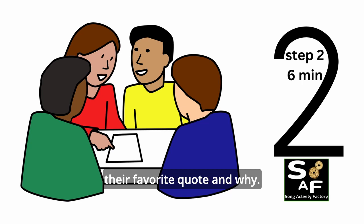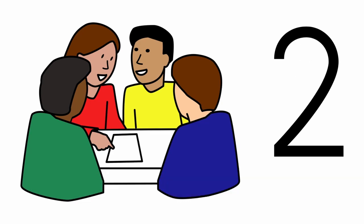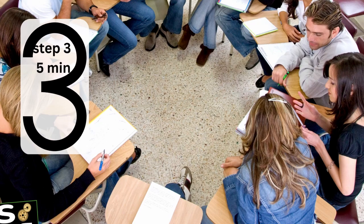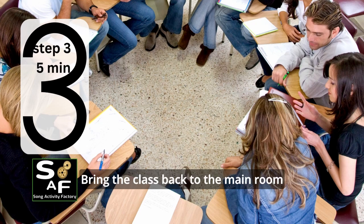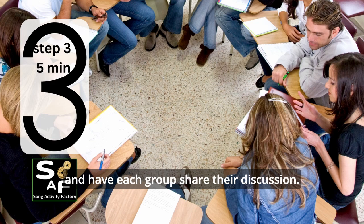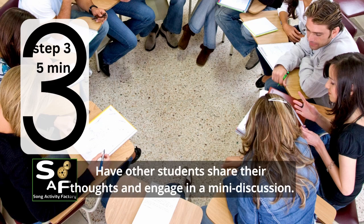Step two — six minutes. In small groups, have students talk about their favorite quote and why. Encourage them to share their thoughts with the rest of the class. Step three — five minutes. Bring the class back to the main room, have each group share their discussion, and engage in a mini discussion.